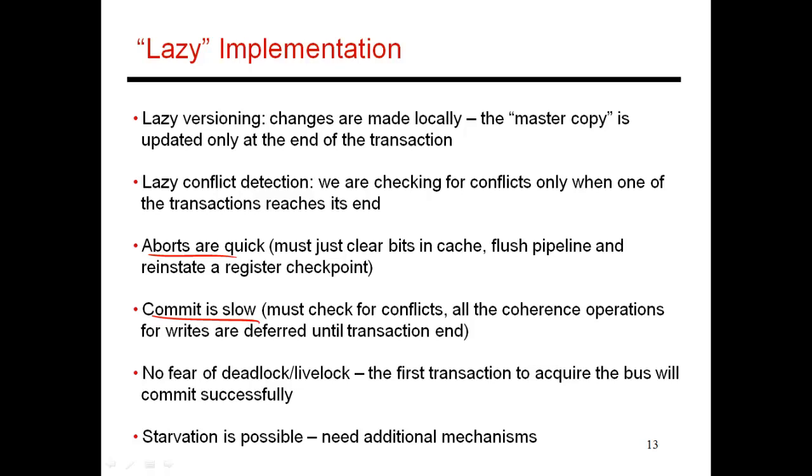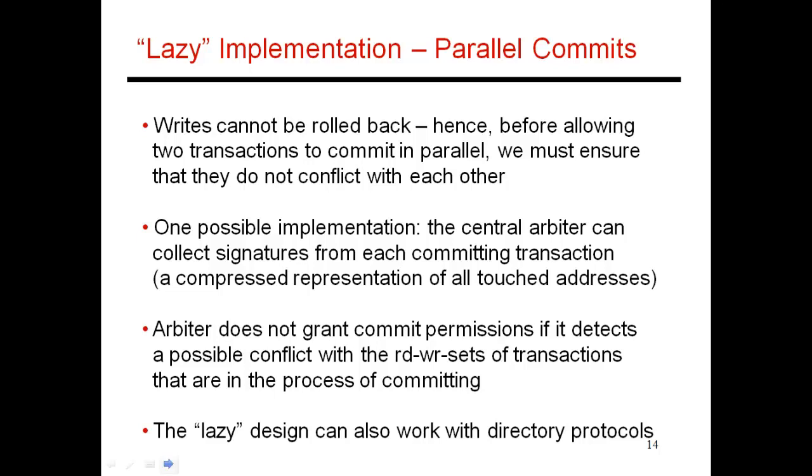One nice feature with this lazy-lazy implementation is that you have no fear of either deadlock or livelock, because the first transaction to reach its end is guaranteed to commit. But as we saw in the previous videos, there can be a possibility of starvation. You will need some additional mechanisms, such as acquiring that token from the arbiter, which ensures that you will be the next transaction to commit. It's also possible to do parallel commits. I won't get into that design in this video, but it's possible for multiple transactions to confirm that it is safe for both to commit in parallel.